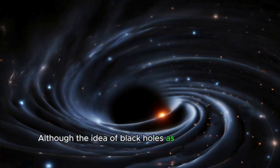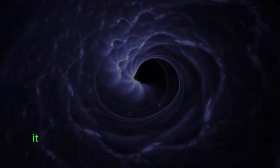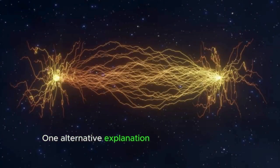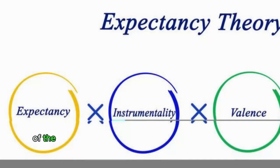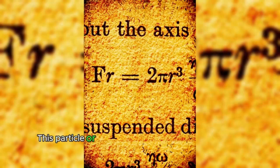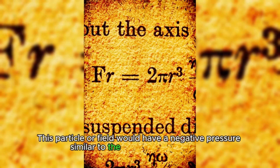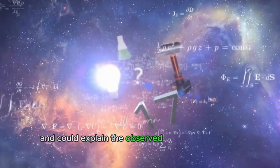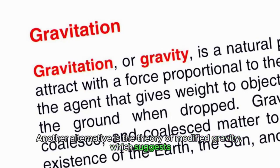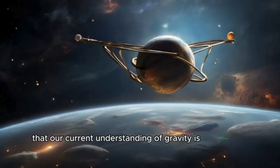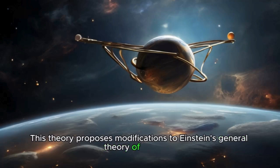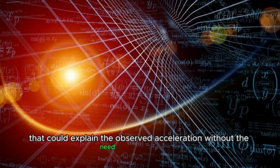Although the idea of black holes as a source of dark energy is fascinating, it is important to consider alternative explanations and criticisms of the theory. One alternative explanation for dark energy is the possibility of the existence of a new fundamental particle or field, which has been proposed in some theories. This particle or field would have a negative pressure similar to the cosmological constant, and could explain the observed acceleration of the expansion of the universe. Another alternative is the theory of modified gravity, which suggests that our current understanding of gravity is incomplete and in need of revision. This theory proposes modifications to Einstein's general theory of relativity that could explain the observed acceleration without the need for dark energy.